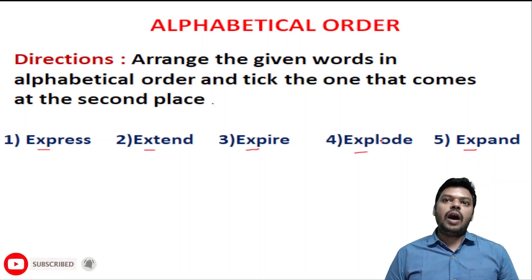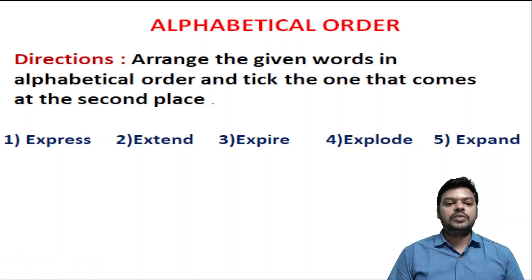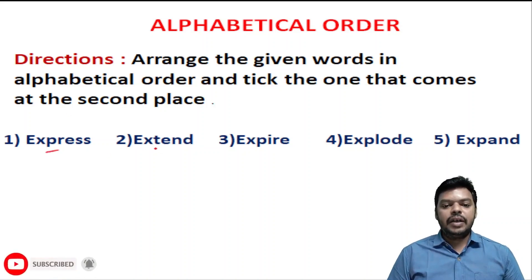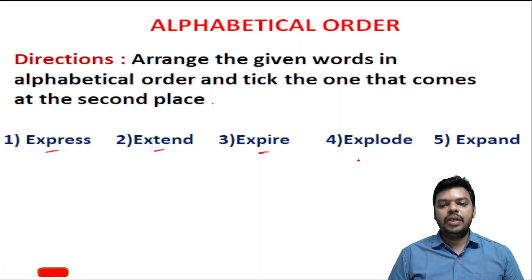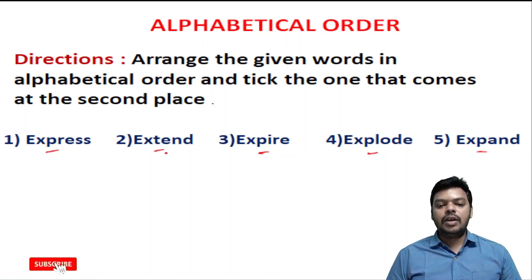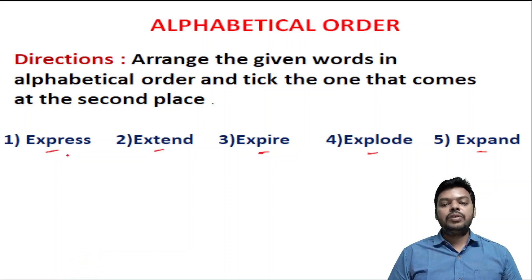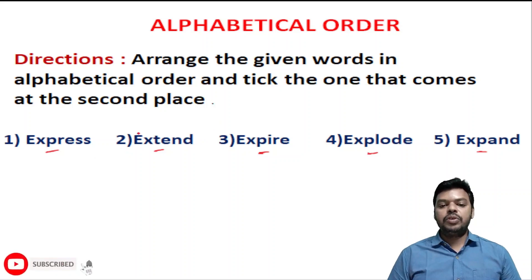We compare the second and third letters. The third alphabet is P — words include those starting with P. The second word starts with T, and others have P as their third letter. We compare: P comes before T.